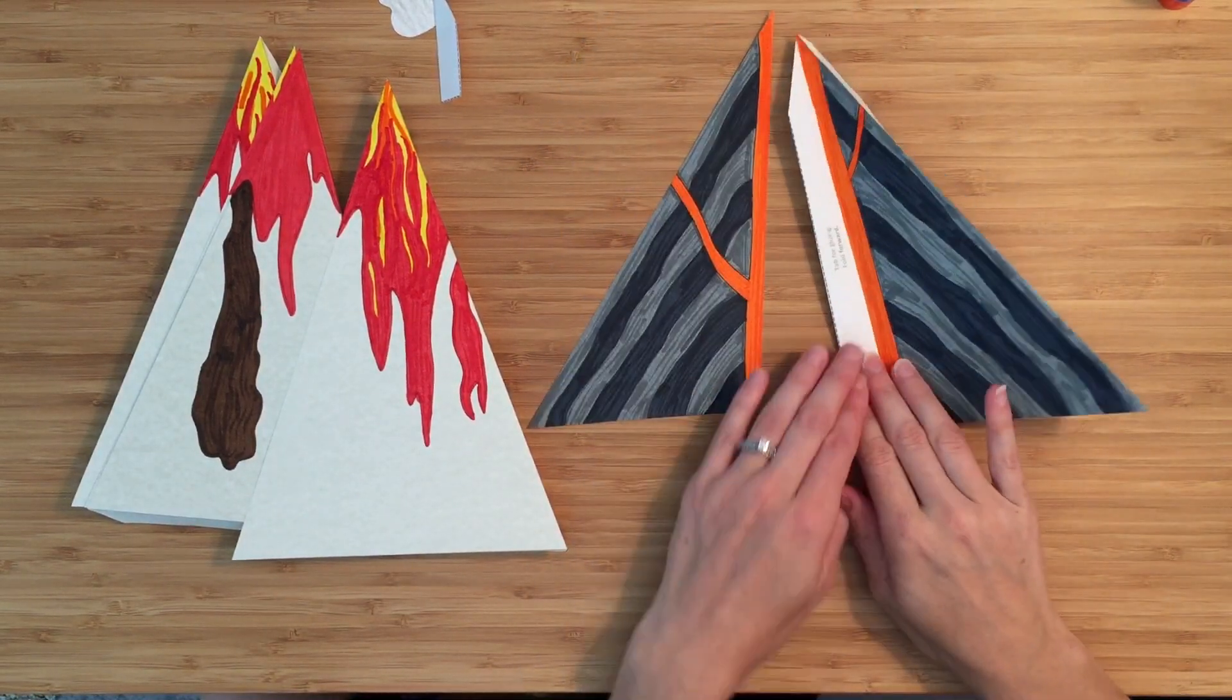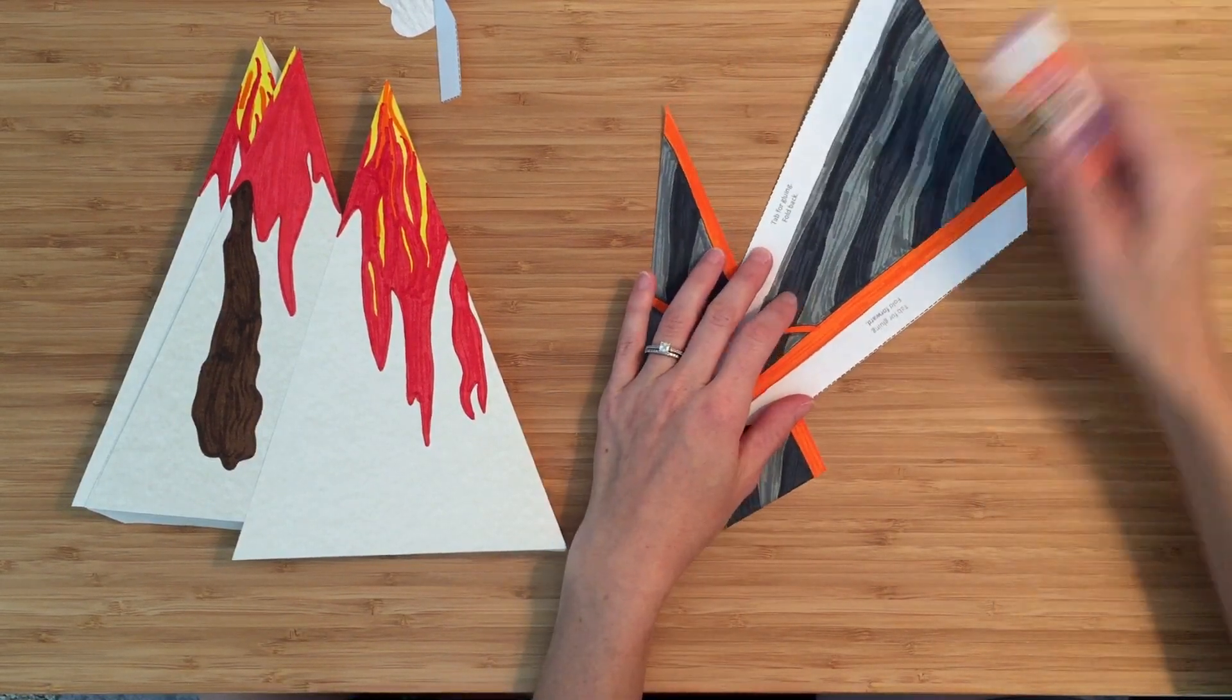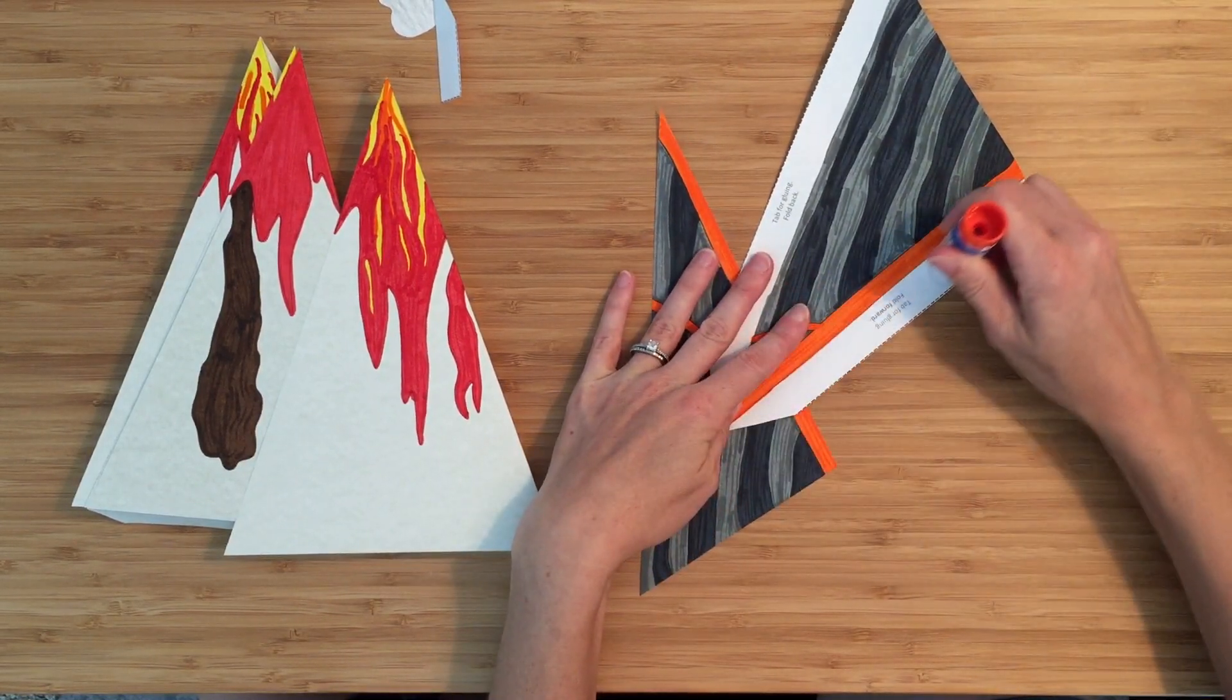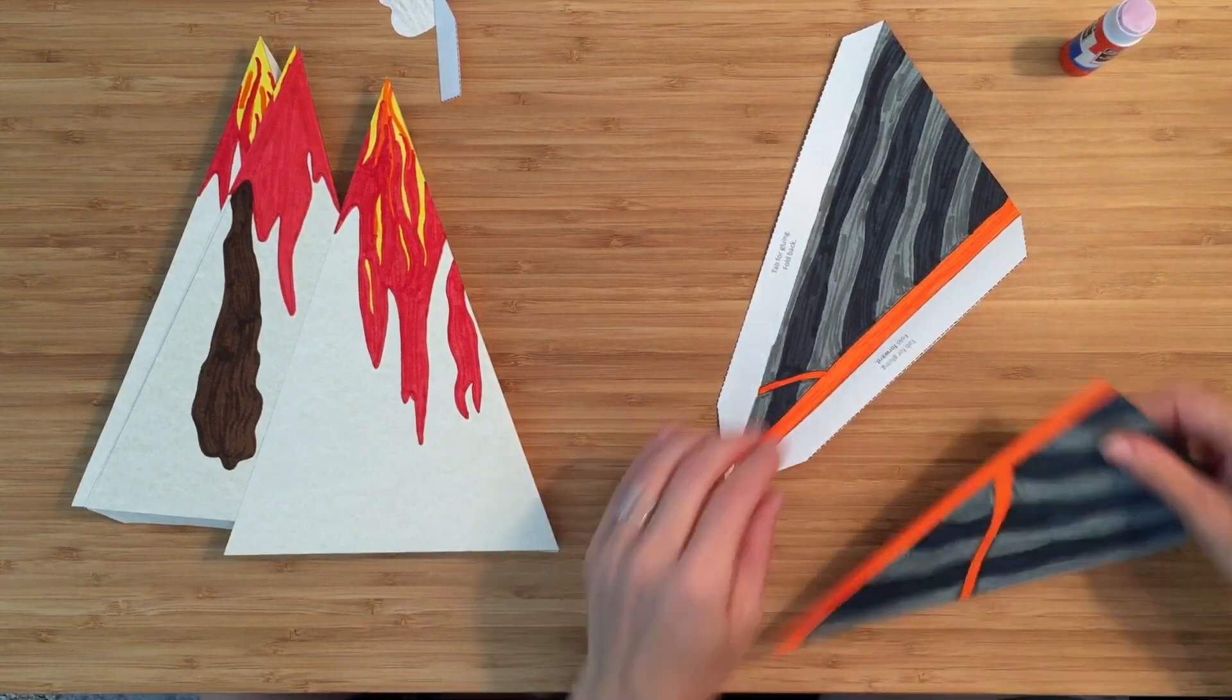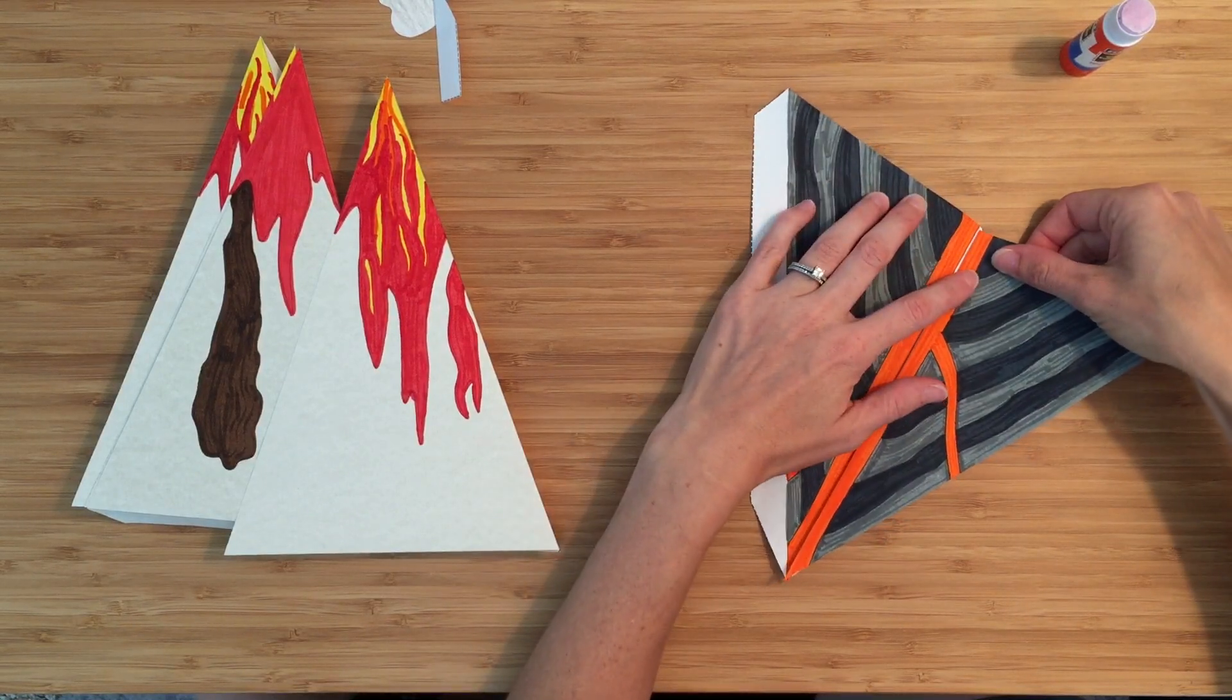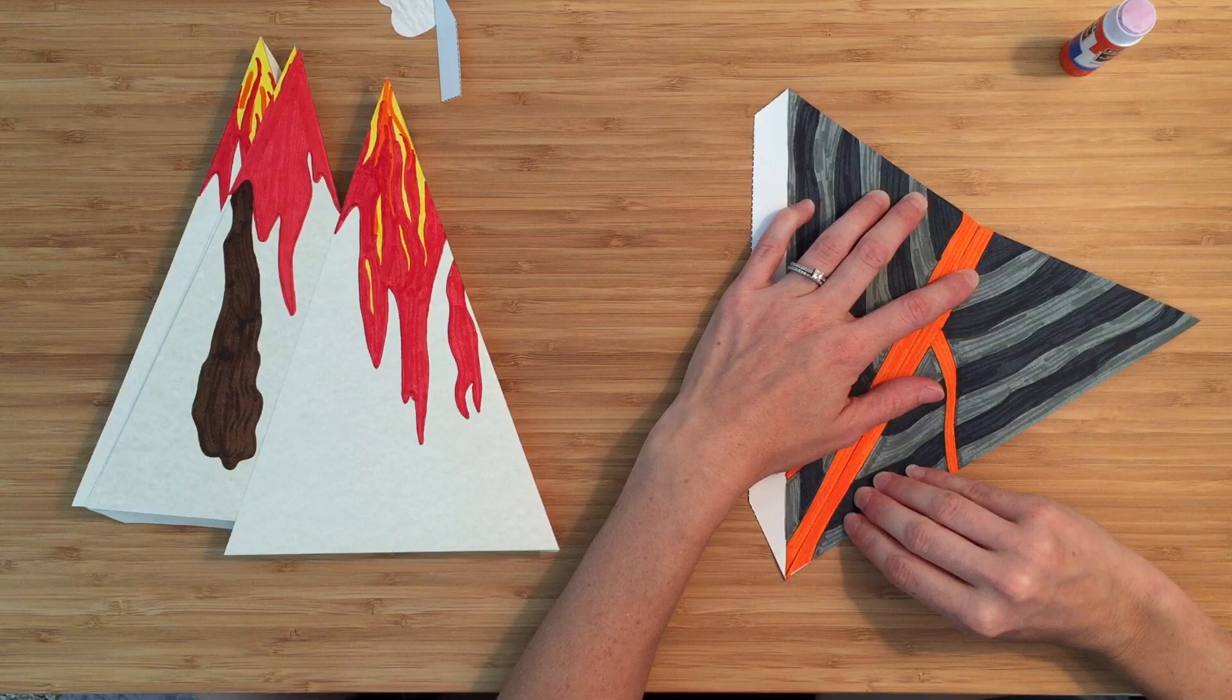Now I will set that aside until I need it later. And I'm going to do these two middle pieces here. This is the tab that's folded forward. And I'm going to take my time lining up the bottom in the middle line.